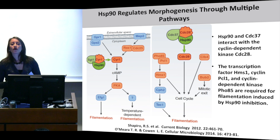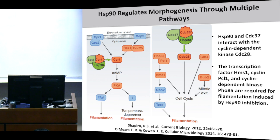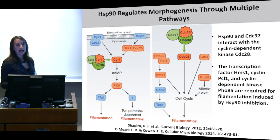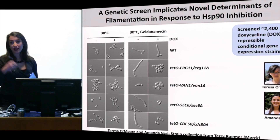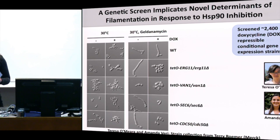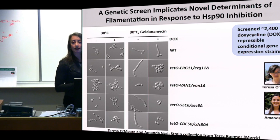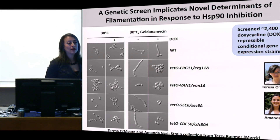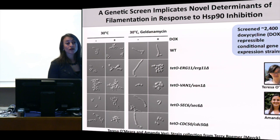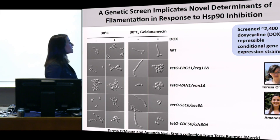Given that we found many pathways by looking at only a small portion of the genome, we scaled up to interrogate a mutant collection obtained from Terry Romer. This was a collection of strains where the only copy of a particular gene was placed under control of a tetracycline-repressible promoter, allowing you to dial down expression of the essential gene and monitor relevant phenotypes.